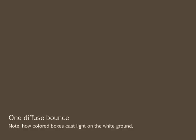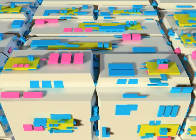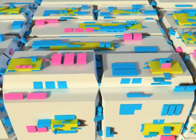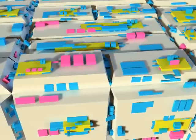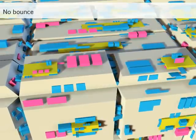We can include one indirect bounce of light. In this example, a bright light from the side bounces from the colored cubes onto the ground. We compare ambient occlusion, then our method, then ambient occlusion again, and finally our method.